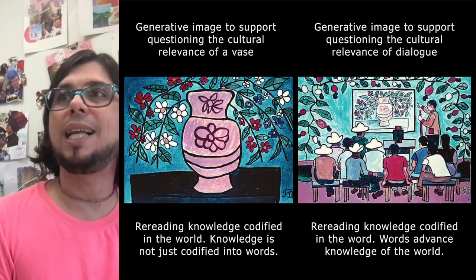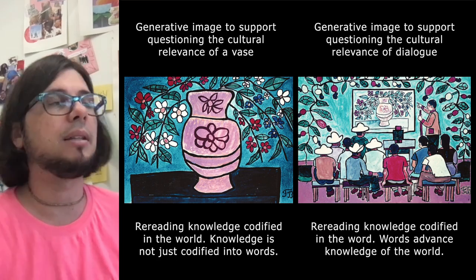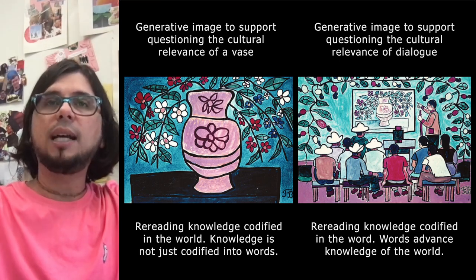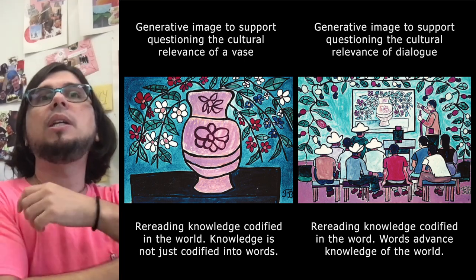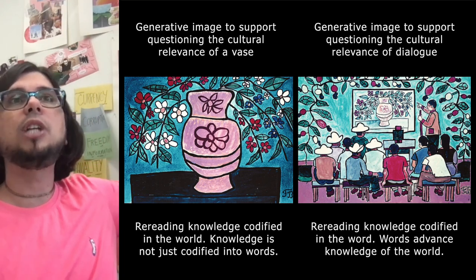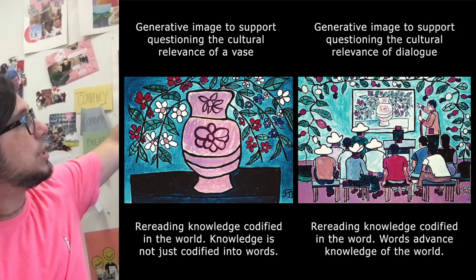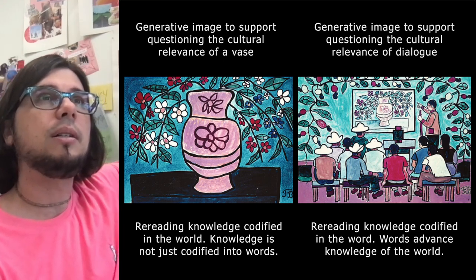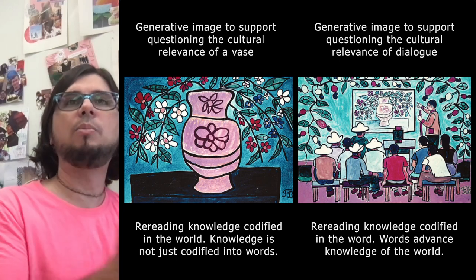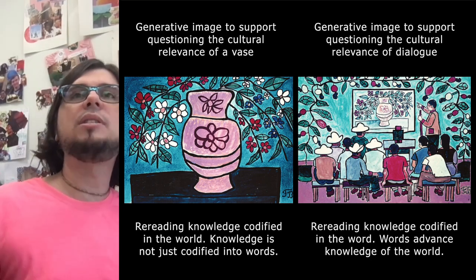Here is how he operationalized this in the 'circles of culture,' one element of the literacy method — similar to what we did here. We had a discussion about the text we read, but instead of a text, for people who could not read, they would use generative images — images that would generate debate. The discussion was about the cultural relevance of objects around us. If you can read those objects, you are already reading — that was his point.